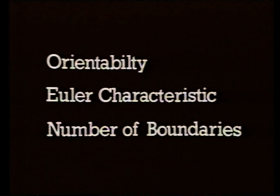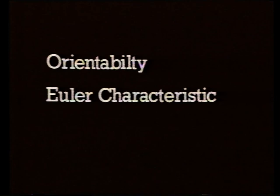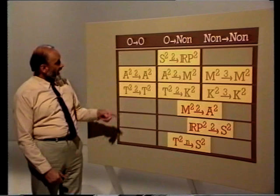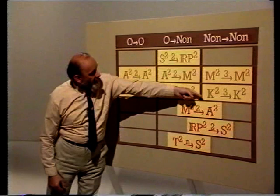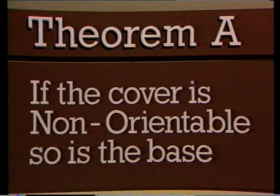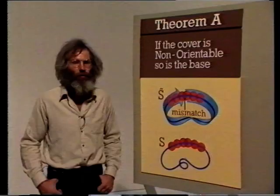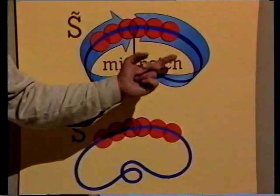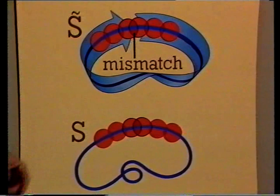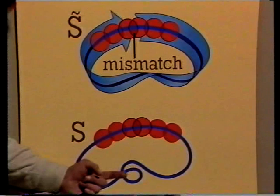We'll move on to the first two invariants and prove a theorem about each that tells us what the possibilities are for cover and base. Let's take orientability first. We've seen three types of example: orientable to orientable, orientable to non-orientable, and non-orientable to non-orientable. What about the fourth possibility — non-orientable to orientable? We can prove this can't happen. If the cover is non-orientable, the base must also be non-orientable. To prove this, take an orientation-reversing curve in the cover; then it's easy to show that the projection of this curve is also orientation-reversing, and hence the base must also be non-orientable.